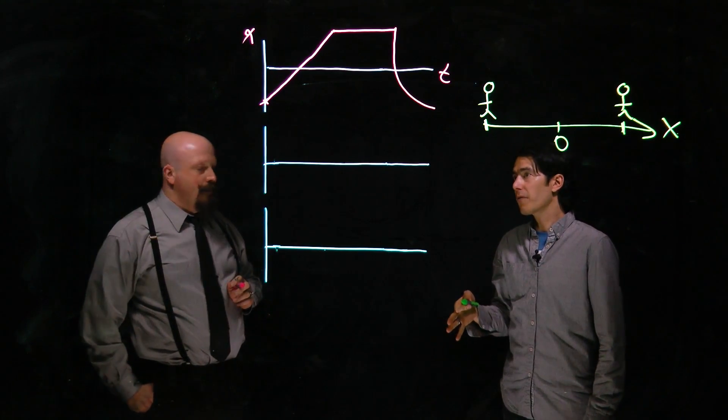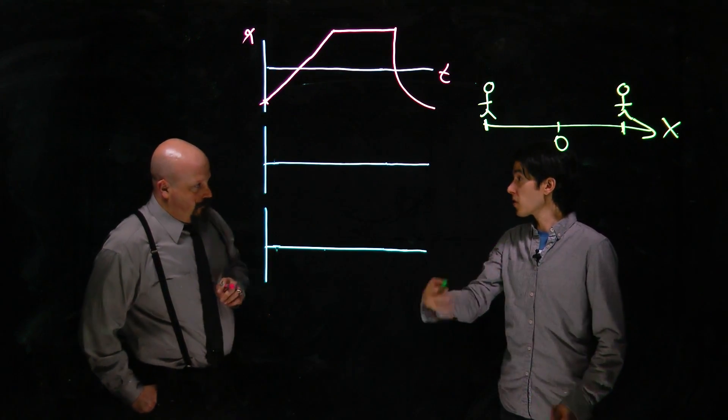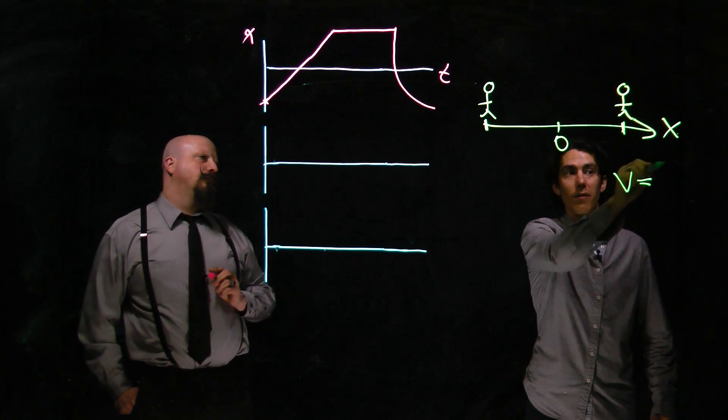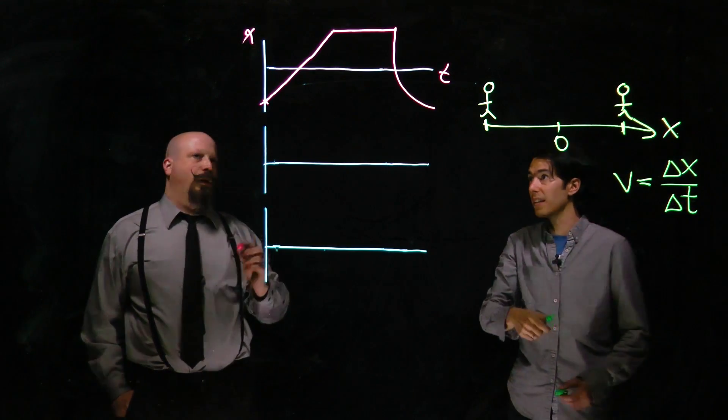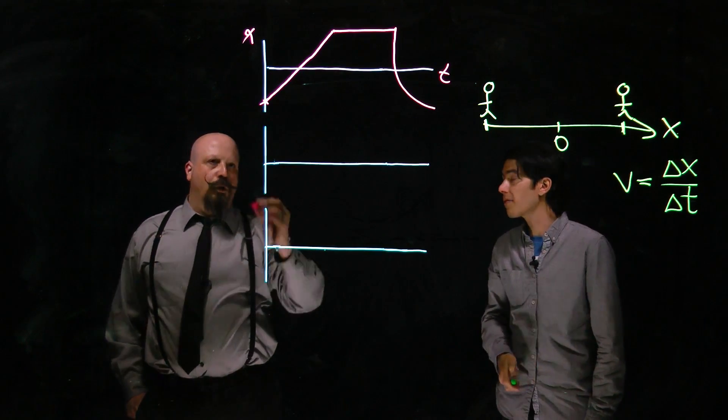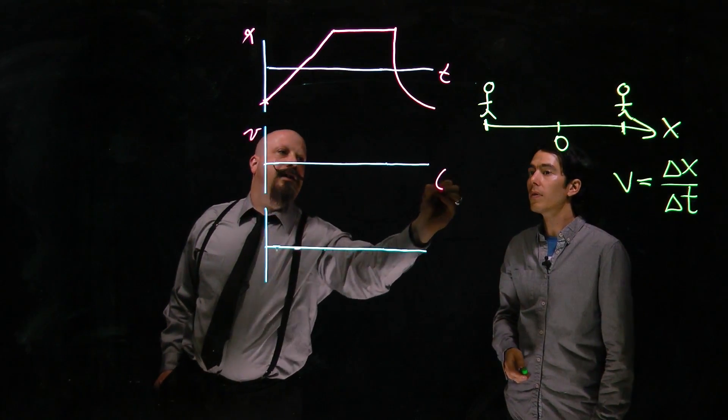Now, one thing that we can get from a graph is information from the slope. If we think about velocity, velocity is defined as displacement over time, delta x over delta t. And that's just the rise over the run on this graph. Well then we can plot that too. You're going to have velocity versus time.